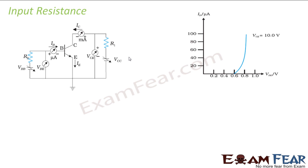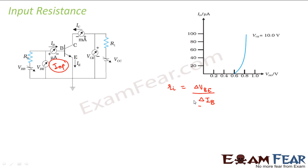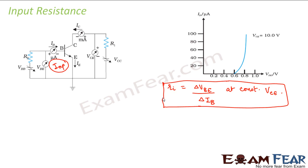So let us see what is the input resistance of a transistor. When I talk about input resistance, I'll concentrate only on the input circuit and the input characteristics of the transistor. The graph is plotted between current and voltage. Input resistance is nothing but the change in voltage — delta V_BE divided by delta I_B — at constant V_CE.